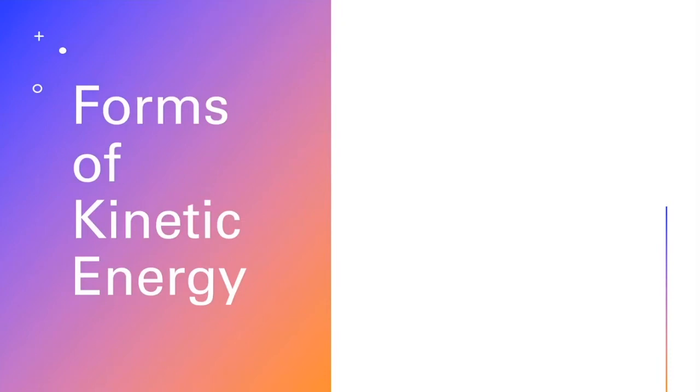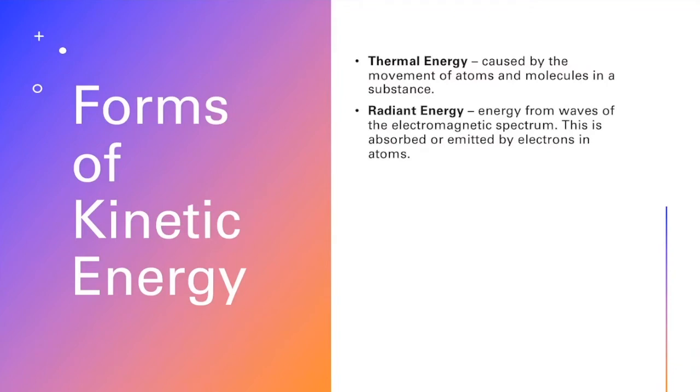All right, so now let's talk about some forms of kinetic energy. First is thermal energy, caused by the movement of atoms and molecules in a substance. The faster they're moving, the more thermal energy they're going to have. Then we've got radiant energy—energy from waves of the electromagnetic spectrum that is absorbed or emitted by the electrons of atoms. We've actually talked about this earlier in the year when we talked about electrons in our electrons unit.